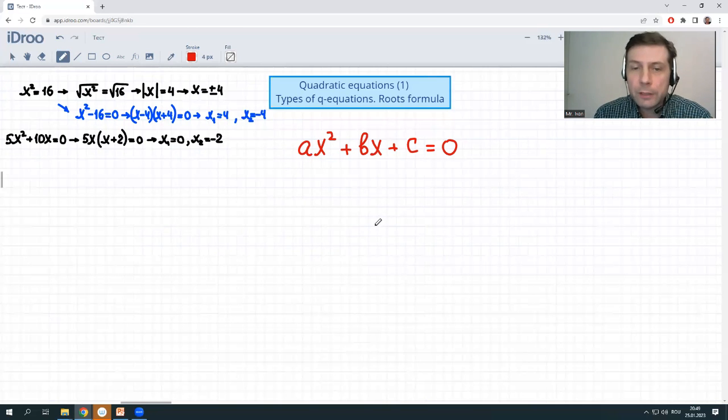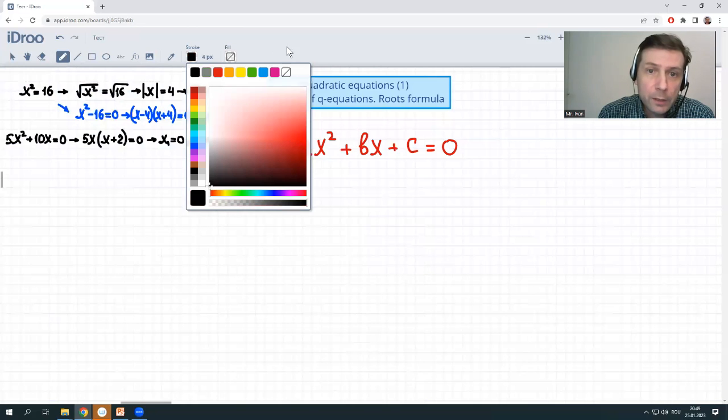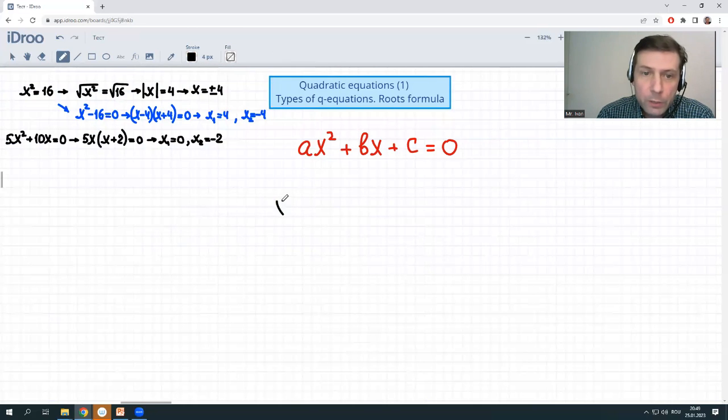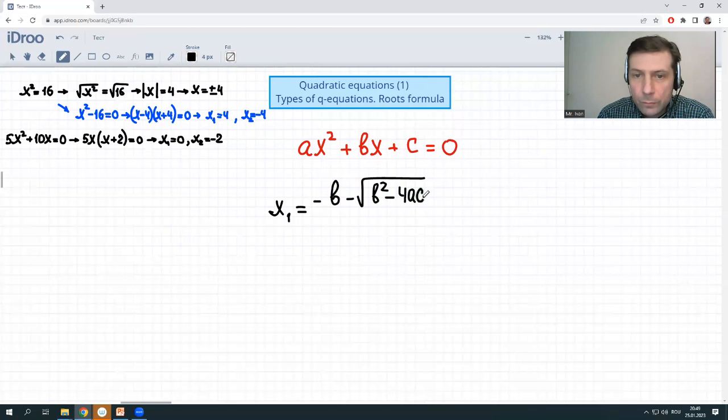We could solve either one, any one by the quadratic roots formula, which is here. x1 or x sub 1, if you like, is equal to negative b minus root b squared minus 4ac. Multiplication of coefficients. It's a fraction divided by 2a. OK. This is the first root.